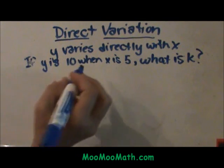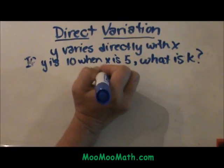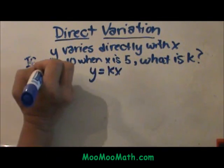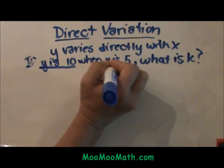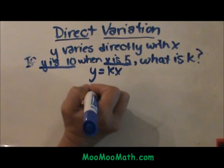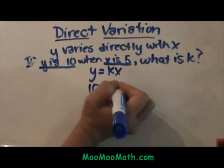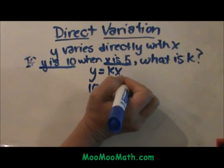We are going to write the formula down. y equals kx and when y is 10, x is 5. I am going to plug in 10 for y and 5 for x.